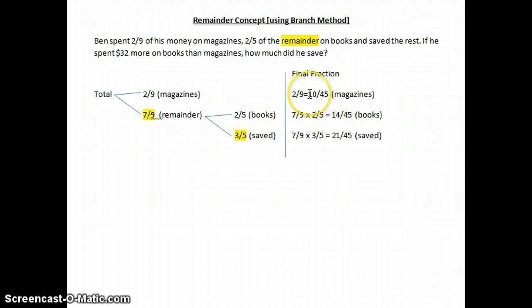And this is the same as 10 out of 45, and this is the amount that is spent on magazines. You can see that this is now denominator 45, 45, 45, and you add up 10 plus 14 plus 21 you should get 45 out of 45, one whole. So now let's continue. We spent $32 more on books than magazines. How many units does he spend on books? Books he spent 14 units. I hope you can see that books actually is 14 units - how do I know 14 units from the numerator here.